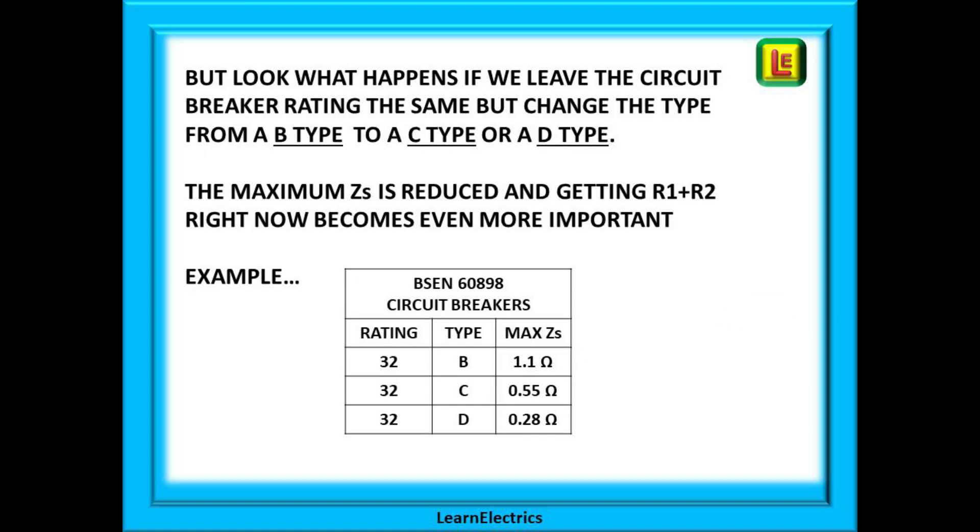But wait, we cannot just change any breaker for any other. ZS rules must be followed. Look what happens if we keep the rating the same but install a different type as C or D type. Some electricians would change the popular type B breaker for a type C where the customer complains of the breaker nuisance tripping. If you change to a type C, the permitted ZS goes down. It is now even harder to get the figures to match and cable lengths and sizes become more critical. And changing to a type D breaker makes it worse again. So please be aware of the effects of changing breaker sizes. It can sometimes work in your favour and sometimes against you. We must always think of the user's safety if something goes wrong.